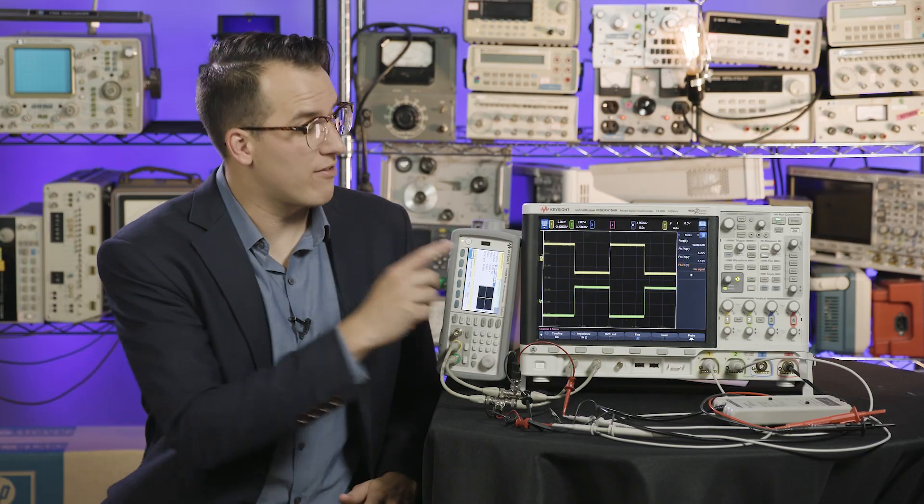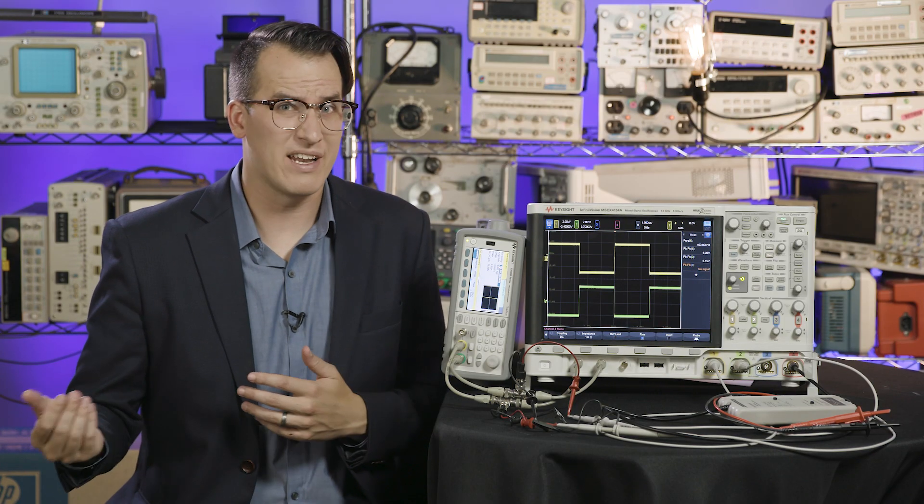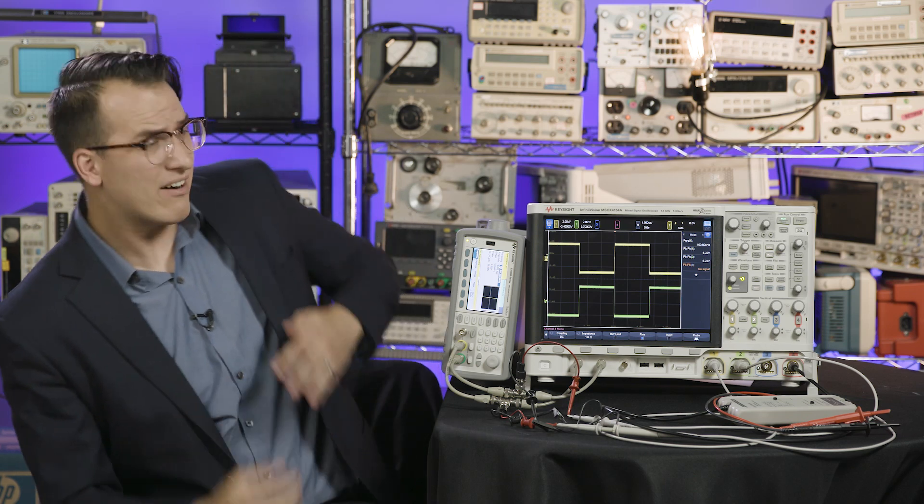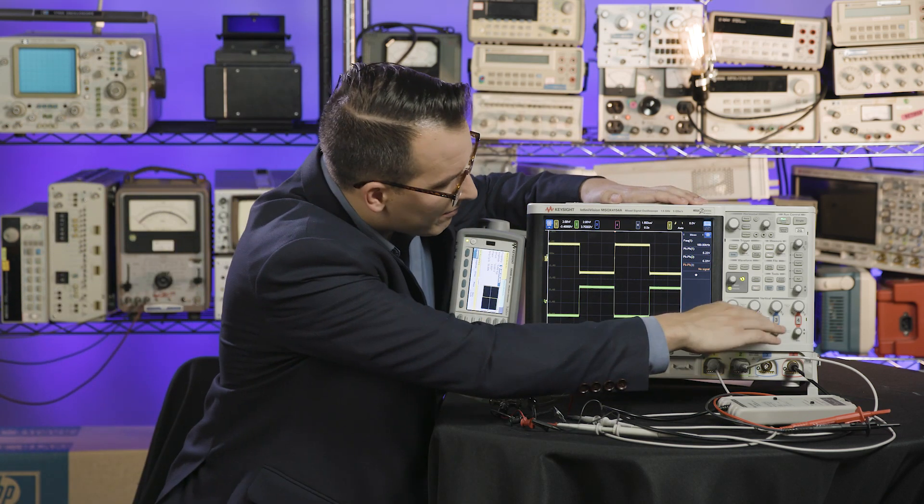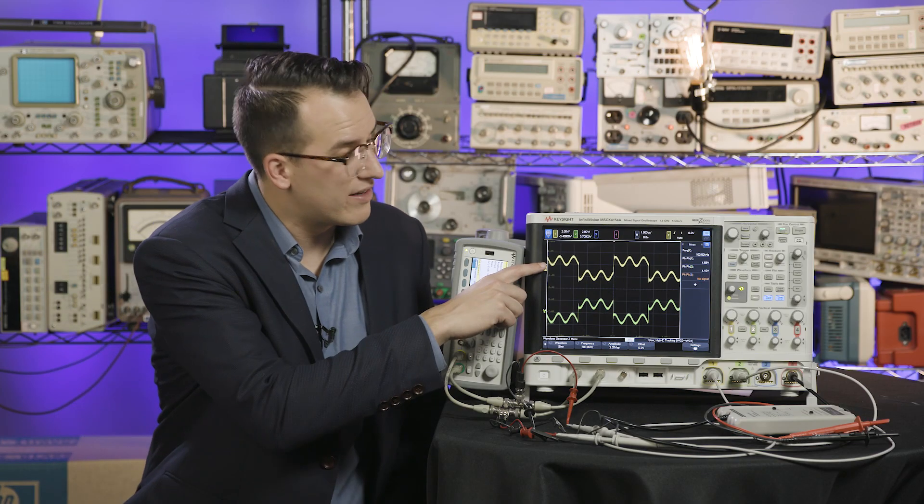Here we have a differential square wave signal. It's two identical waves, but one is inverted. This can represent a digital bus of your choice. And now let's mix in a sine wave on top of it. The sine wave represents noise injected into both data lines. Here's what the signal looks like with a single-ended probe.